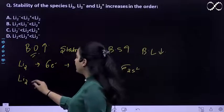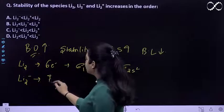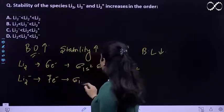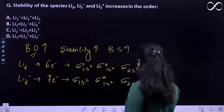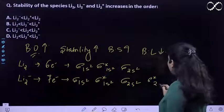If we talk about Li₂⁻, it will have 7 electrons: σ1s², σ*1s², σ2s², σ*2s¹.